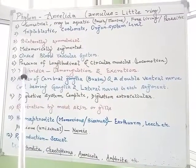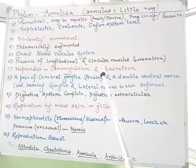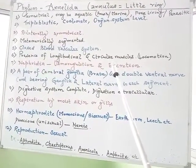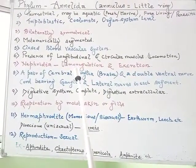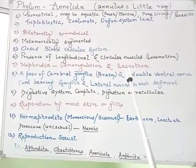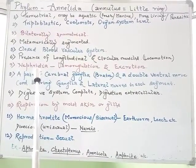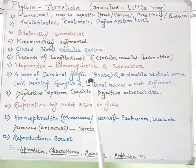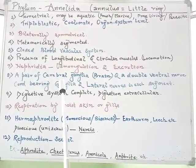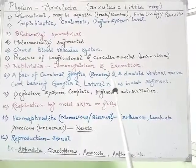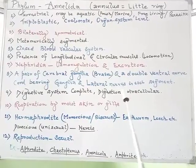They have longitudinal and circular muscles that help in locomotion. Osmoregulation and excretion are completed through nephridia, which are present in the segments. They have a pair of cerebral ganglia and a dorsal-ventral nerve cord bearing ganglia and lateral nerves in each segment.